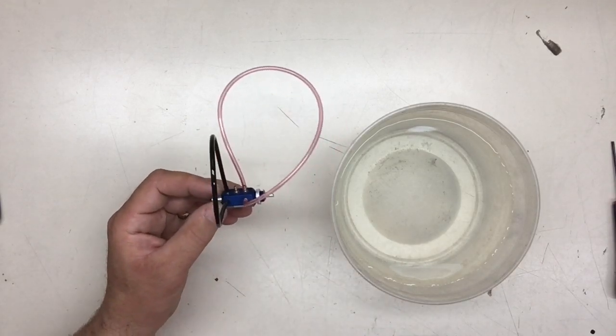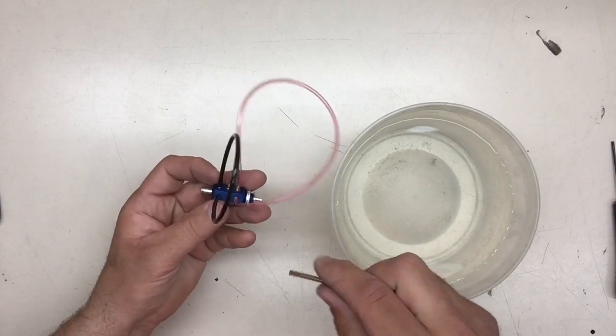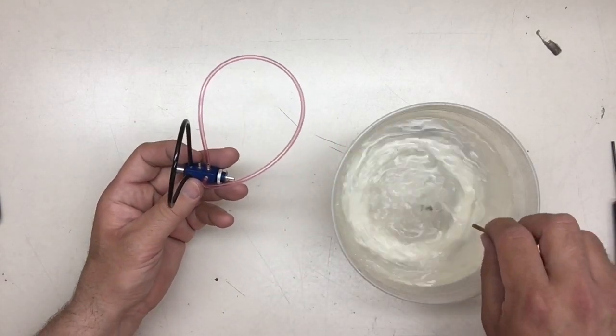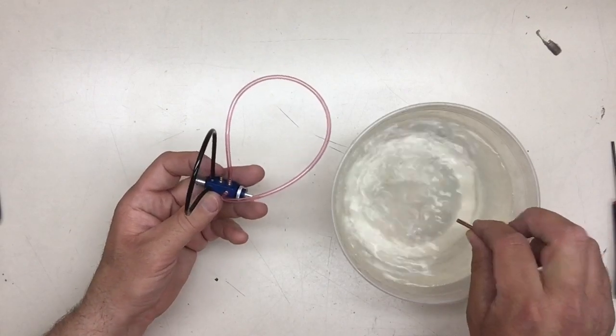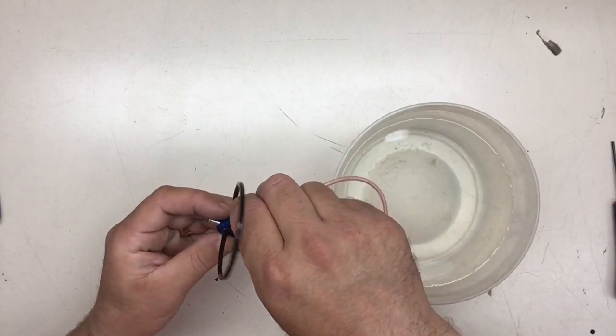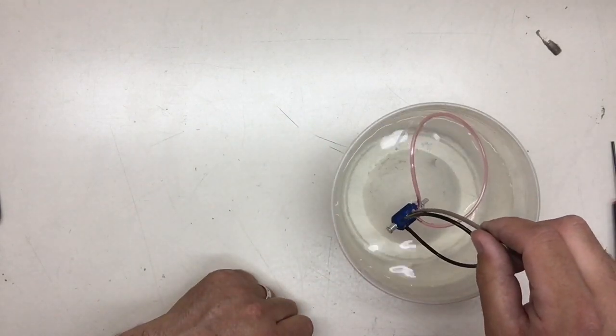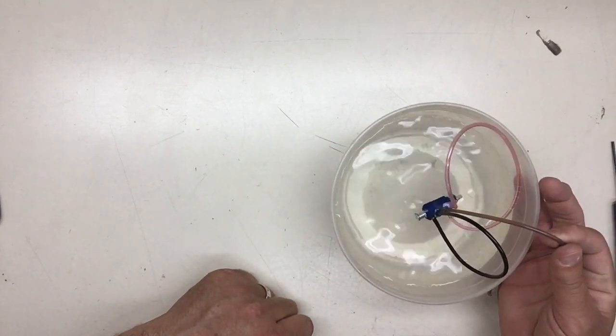All right, let's put air to this so that you can see that it is sealed. You can see the water moving. I am running air through my tube here. No bubbles. No bubbles.